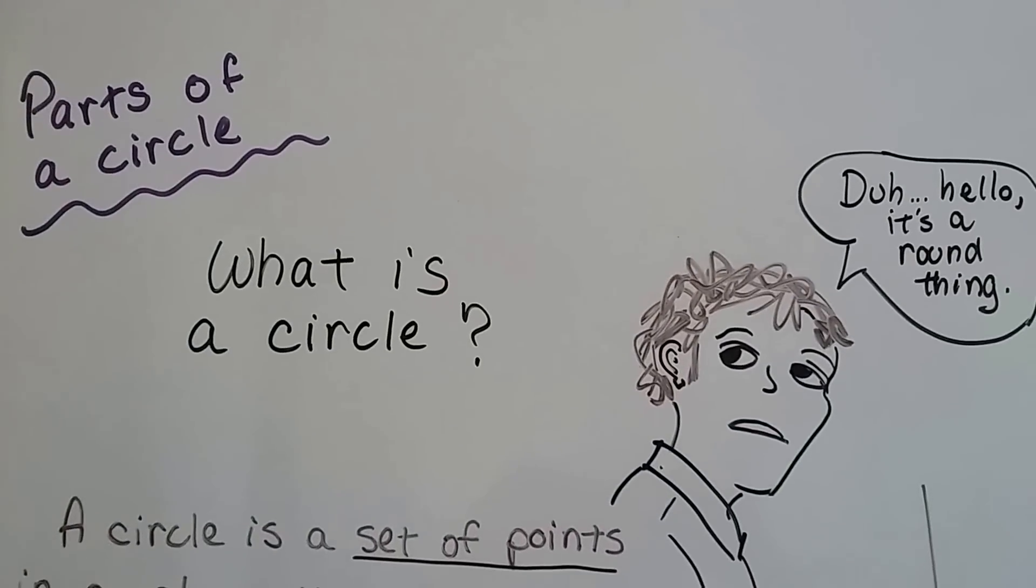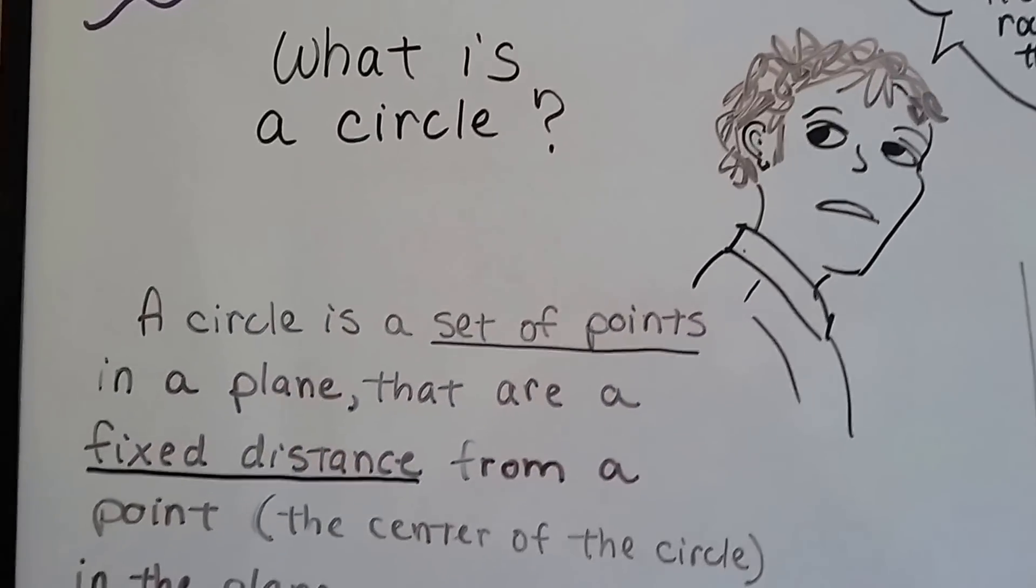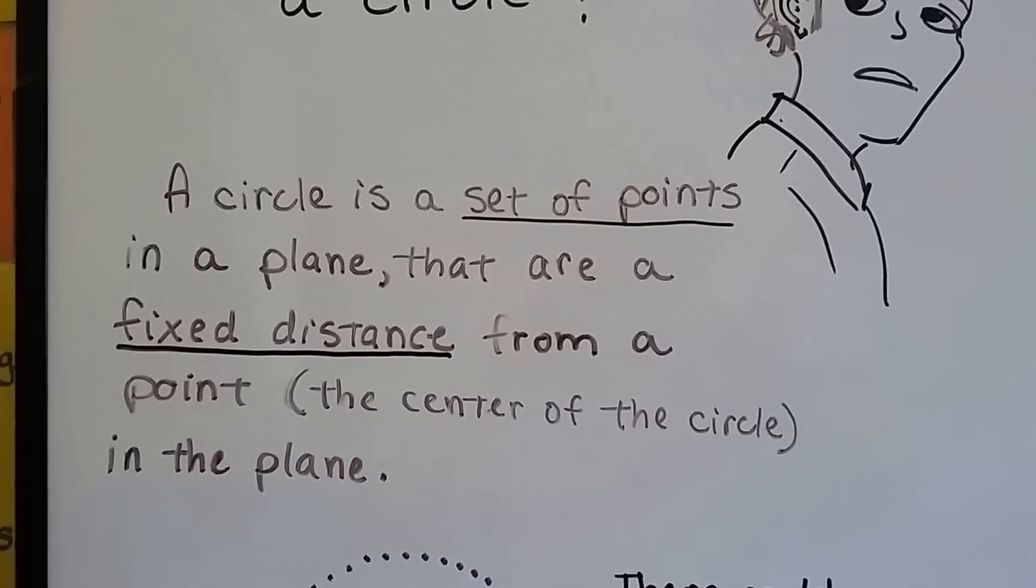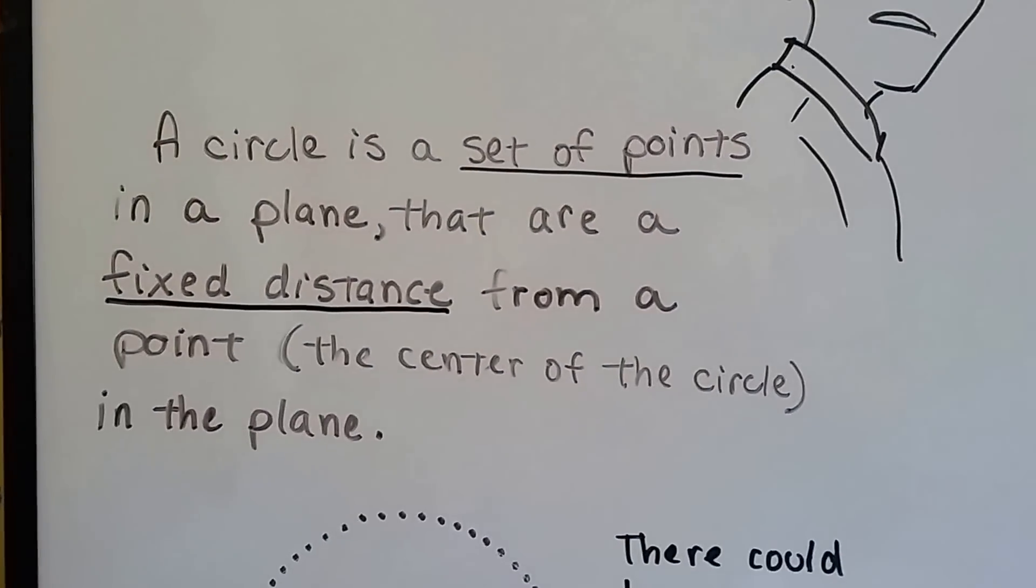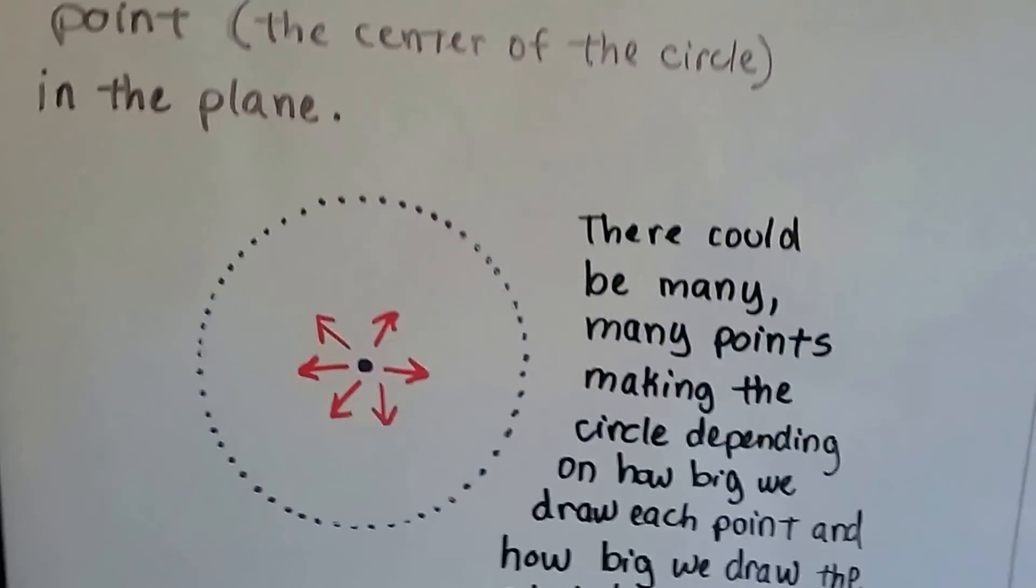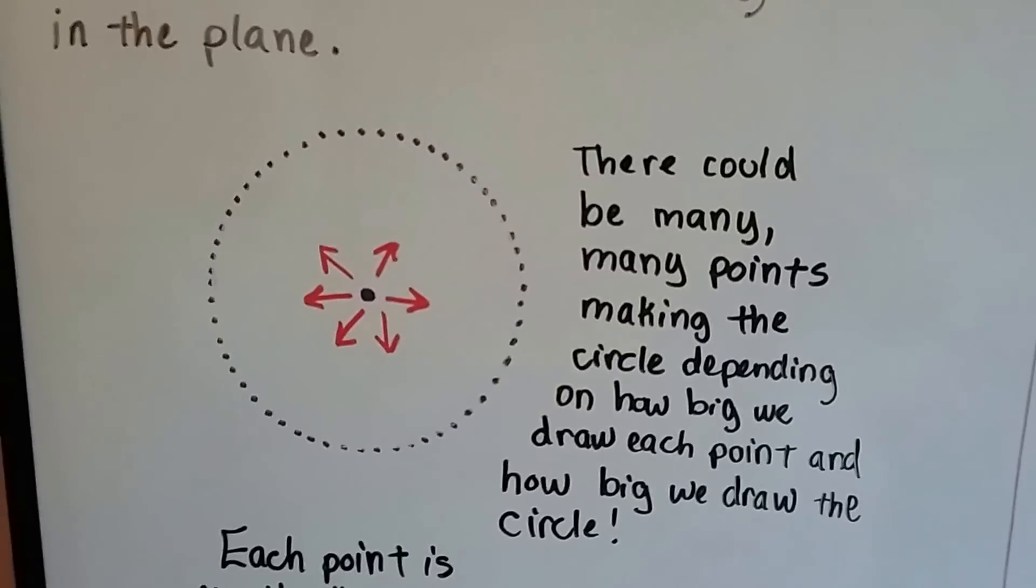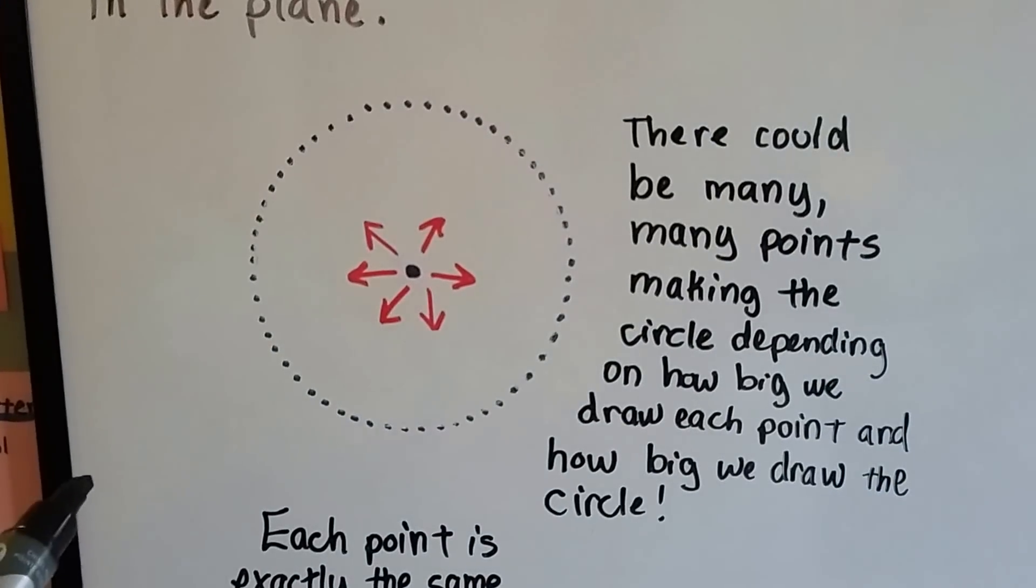Well, it's more than just a round thing. A circle is a set of points in a plane that are a fixed distance from a point, the center of the circle, in the plane. So it's a set of points that are a fixed distance from the center, like this. There could be many, many points making the circle, depending on how big we draw each point and how big we draw the circle.